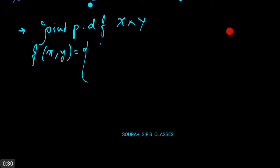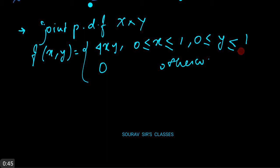...that is 4xy for 0 ≤ x ≤ 1, 0 ≤ y ≤ 1, or 0 otherwise. Now we have to find out probability of x + y ≤ 1.